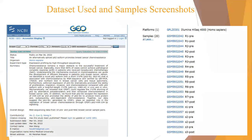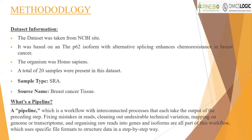This slide shows the datasets and samples used. The dataset was taken from the NCBI site, based on the P62 isoform with alternative splicing enhancing chemo resistance in breast cancer. The organism was Homo sapiens. A total of 20 samples were present. Data from 10 pre- and post-NAC breast cancer sample pairs were used to create the overall design. The sample type was SRA and the source was breast cancer tissue.